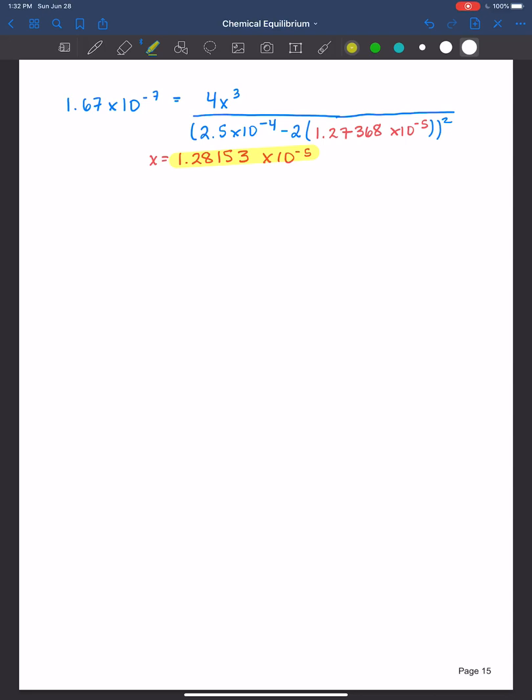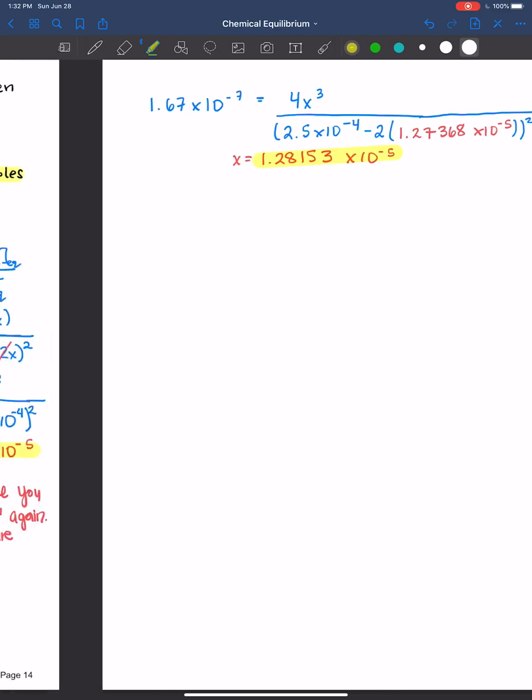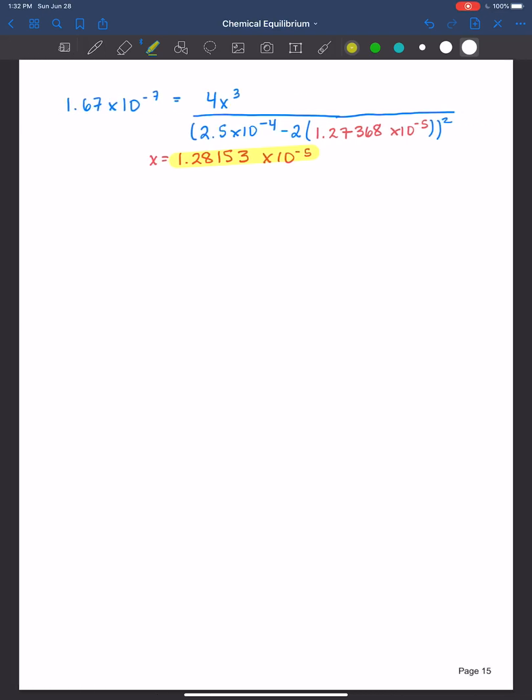So definitely close to the second approximation, which was 1.27368 times 10 to the negative 5th. Those are within 1% of another, but sometimes I just like to take it one more step just to be sure. So let's just do this one more time together.